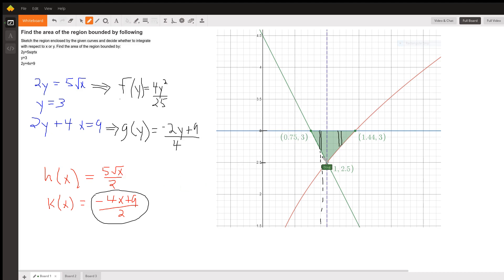If we go the other direction, integrating with respect to y, our typical rectangles will look like this. And in all cases, we'll be going from 2.5 for the lower y bound up to 3. And the length of that rectangle will be right minus left. And it will be the same all the way across the interval.